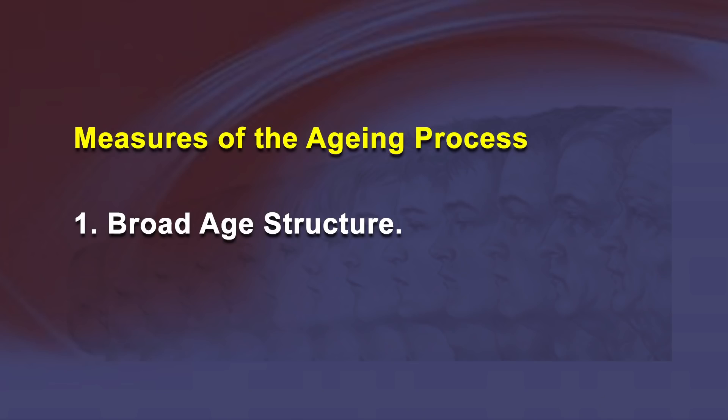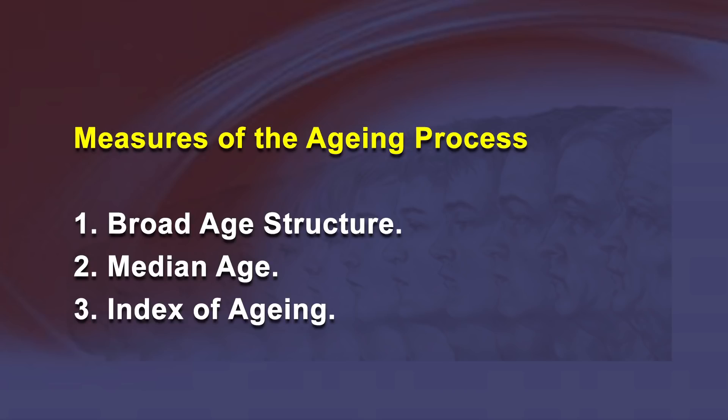Measures of the aging process: The aging process can be measured in many ways. The following types are discussed: first, broad age structure; second, median age; third, index of aging; and fourth, dependency ratio.